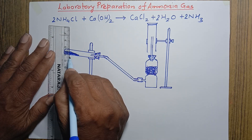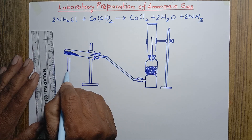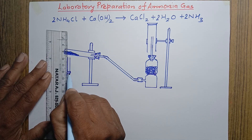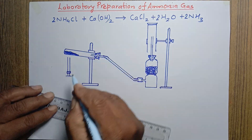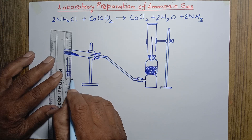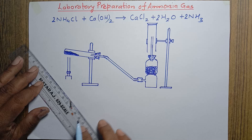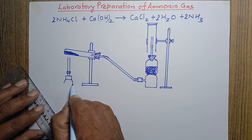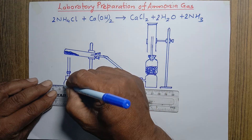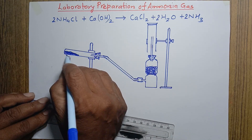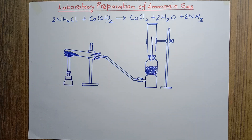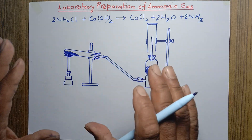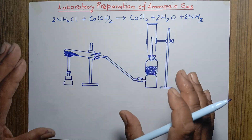Now here I'm going to draw the Bunsen burner. The mixture is heated at this side. This is the complete representation of the diagram showing the laboratory method of preparation of ammonia gas. A diagram is not complete until it is labeled.